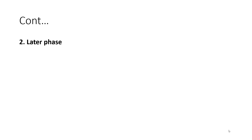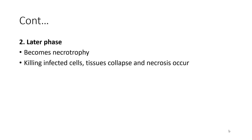Later phase: as the disease progresses, the pathogen switches to necrotrophy, killing infected cells. Tissue collapse and necrosis occur. Tissue collapse is followed by sporangia emergence, which provides the means for dispersal and a new infection cycle occurs.